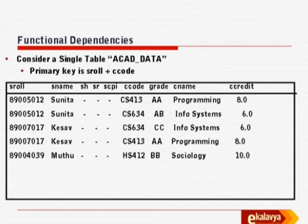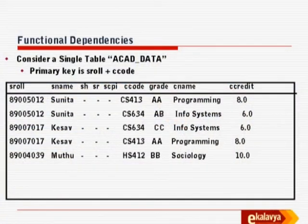Here is a table — a single table called ACAD_DATA (academic data). You will recall our discussion of the academic system: student, course, grades, etc. The fancy option is: why do this complexity of database design with multiple tables? Let me put all data in a single table. What would that schema contain? It will contain roll number, name, hostel, room number, CPI, course code, course grade, course name, credits, etc. Do you agree that all attributes are covered here?